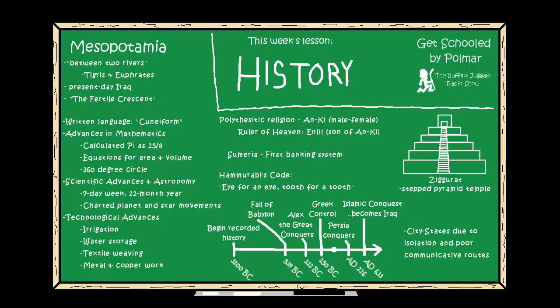Mesopotamia also had the first recorded religion. The religion was polytheistic. The most popular Mesopotamian religion was that of Sumeria. The Sumerian gods were grouped almost like the Christian Trinity — three in one. The god they referred to as Anki: 'An' was the male part, 'Ki' was the female part. Anki's son was Enlil, the air god, who they believed was the most powerful — sitting on the throne, like Zeus or Jupiter.